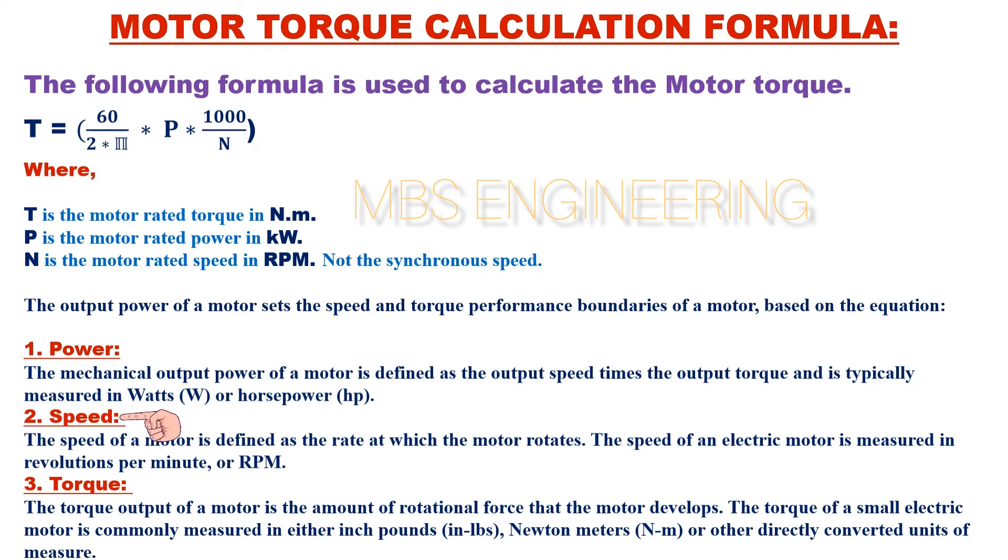Second, we understand what you mean by speed. The speed of a motor is defined as the rate at which the motor rotates. The speed of an electric motor is measured in revolutions per minute, or RPM.